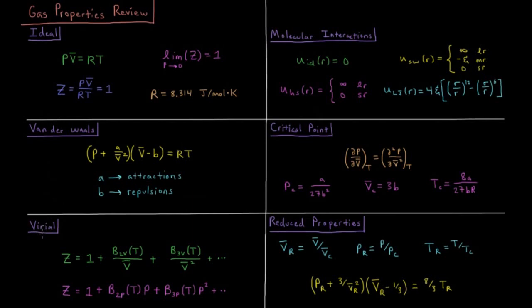Then we have the virial equation of state, which can always be completely accurate in principle if you include enough terms, where Z, our compressibility factor, is equal to 1 plus a series of corrections including these series of virial coefficients: B2V over V bar plus B3V over V bar, where these have names like the second virial coefficient, third virial coefficient, etc.